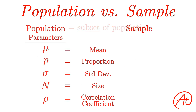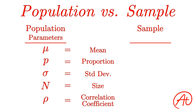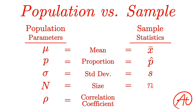Now let's bring back our population symbols and explain what the equivalent ones are for a sample. Similar to how all the values for a population are called parameters, these values for a sample are all called statistics. Just like we use mu to represent a population mean, a sample mean is denoted by x-bar, because it has a little bar on top. A sample proportion looks like a p with a little hat on top, which statisticians call p-hat. Then s represents sample standard deviation, lower case n is the sample size, and r is the sample correlation coefficient.